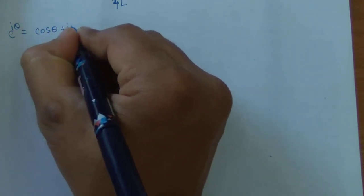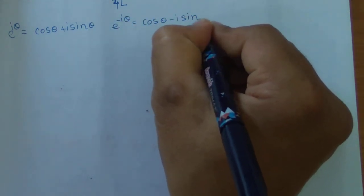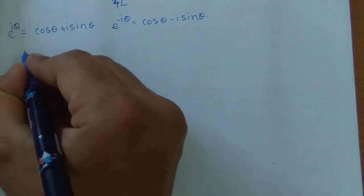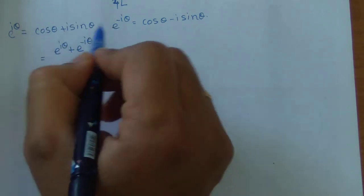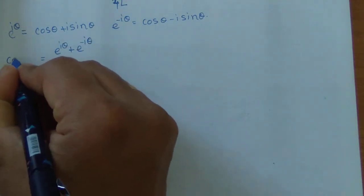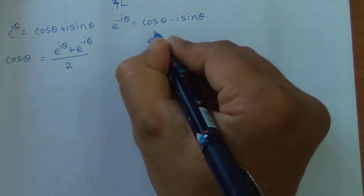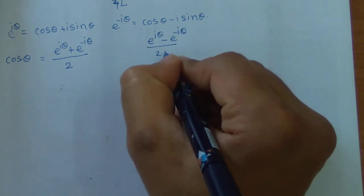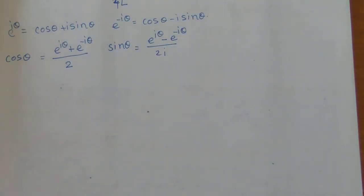In complex numbers we have seen Euler's formula: e raised to iθ is equal to cos θ plus i sin θ, and e raised to minus iθ equals cos θ minus i sin θ. Adding them gives e^(iθ) + e^(-iθ) = 2 cos θ, so cos θ = (e^(iθ) + e^(-iθ))/2. Subtracting gives sin θ = (e^(iθ) - e^(-iθ))/(2i). These are known as Euler's exponential forms of the circular functions.